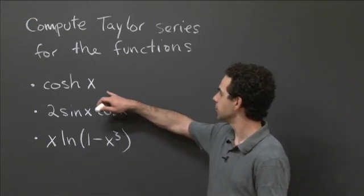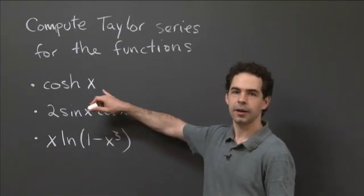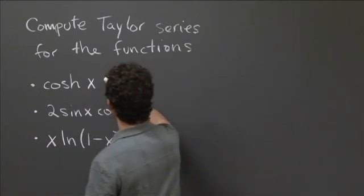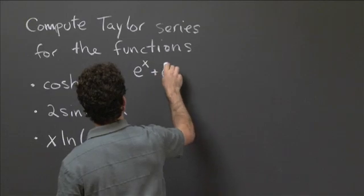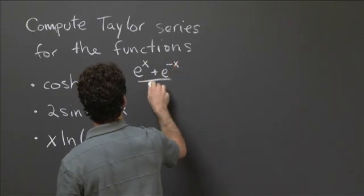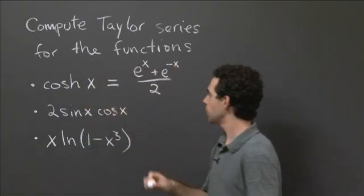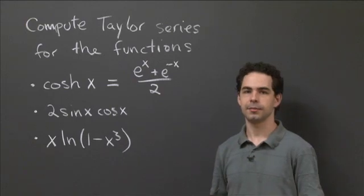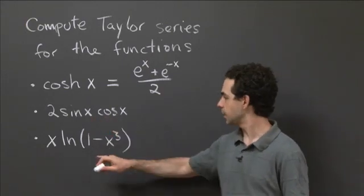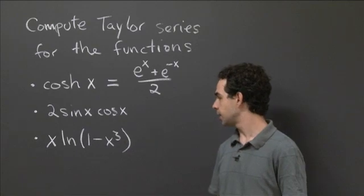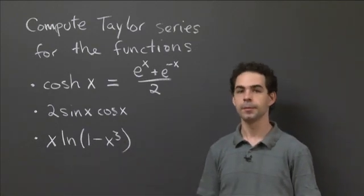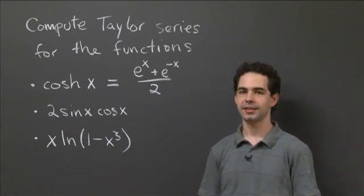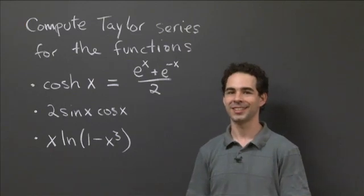The first one is cosh(x), that's the hyperbolic cosine. Just to remind you, this can be written in terms of the exponential function as (e^x + e^(-x)) / 2. The second one is the function 2 times sine of x times cosine of x. And the third one is x times the logarithm of the quantity 1 minus x cubed. Why don't you pause the video, take some time to work out the Taylor series for these three functions, come back, and we can work them out together.